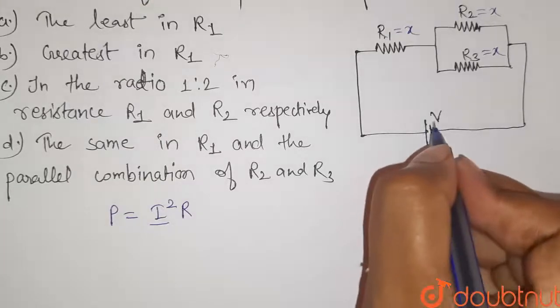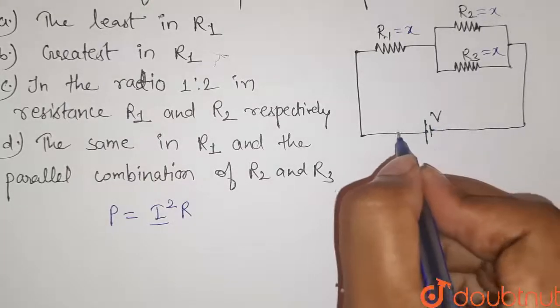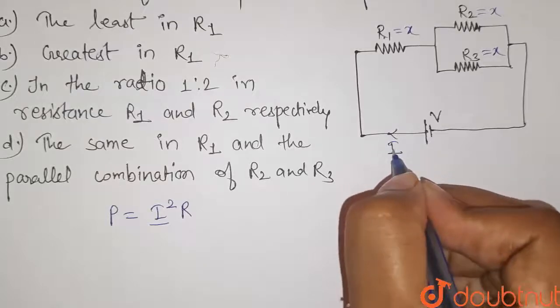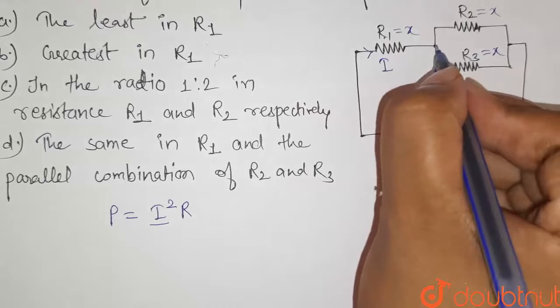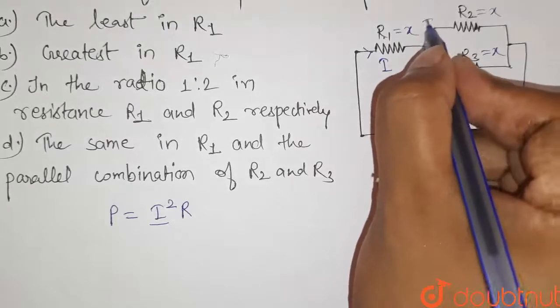So let us take if the current that is flowing through this battery is I. The same current I will flow through this resistor, and on reaching this junction this current will divide into two paths.